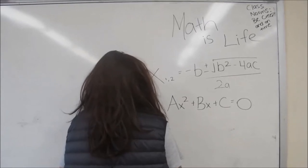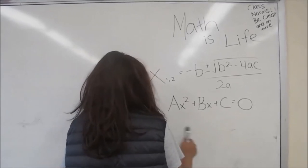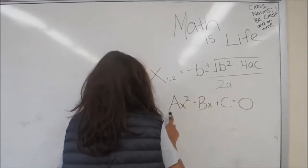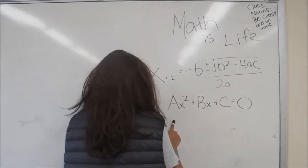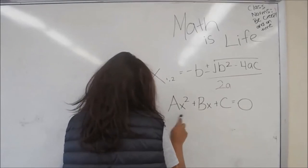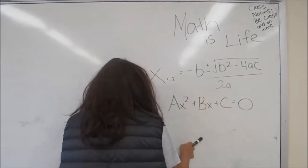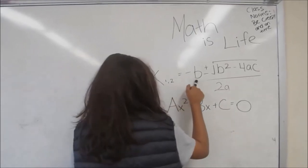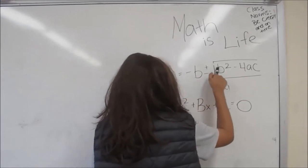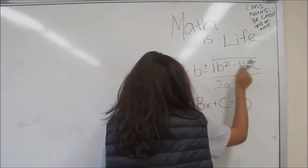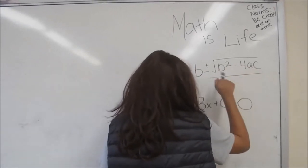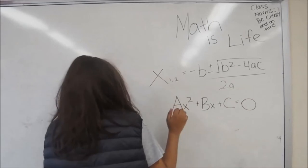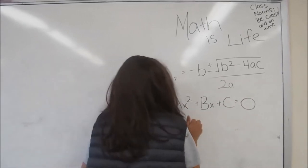When you want to try to get the roots of a quadratic, if you don't know how to factor it, you can substitute a, b, and c into the quadratic formula, which is x₁,₂ equals negative b plus or minus the square root of b squared minus 4ac, all over 2a. If you follow this, it will allow you to get the roots every single time.